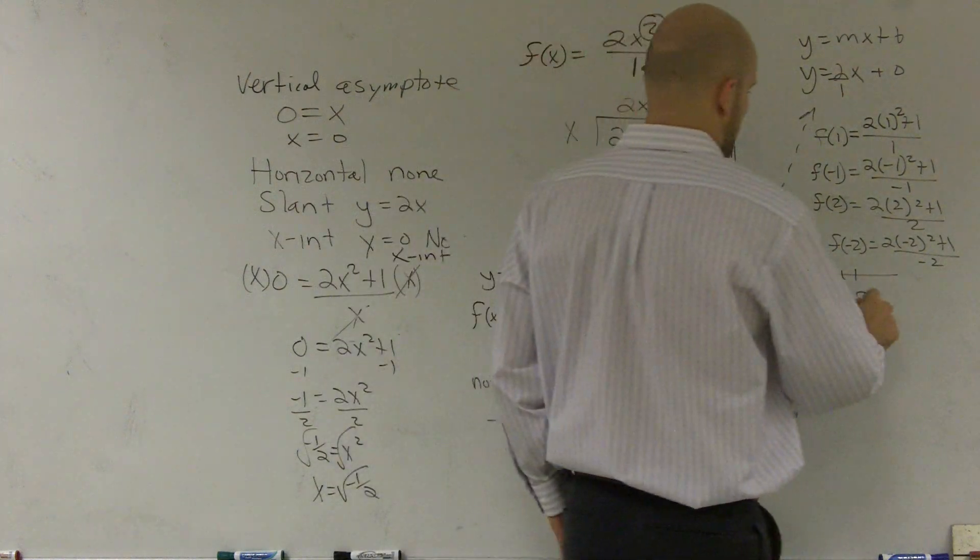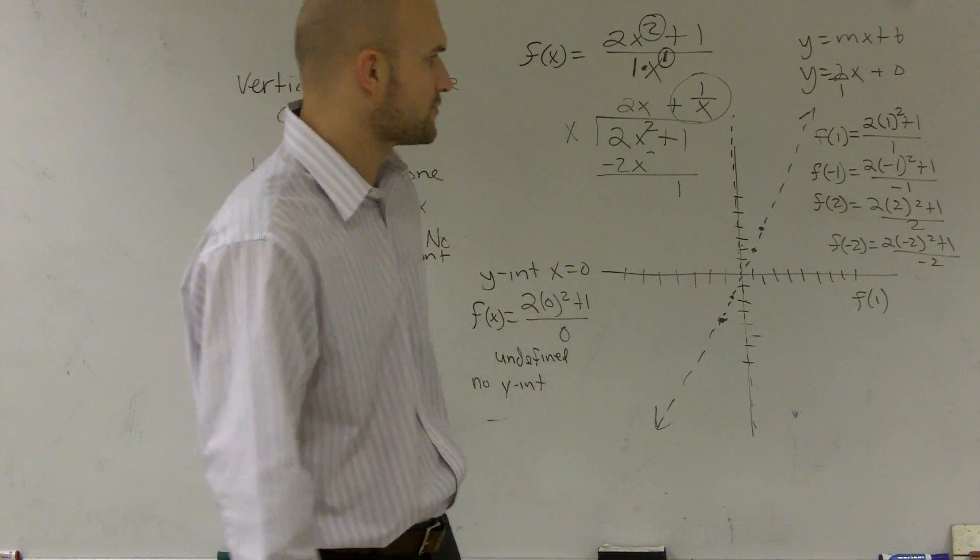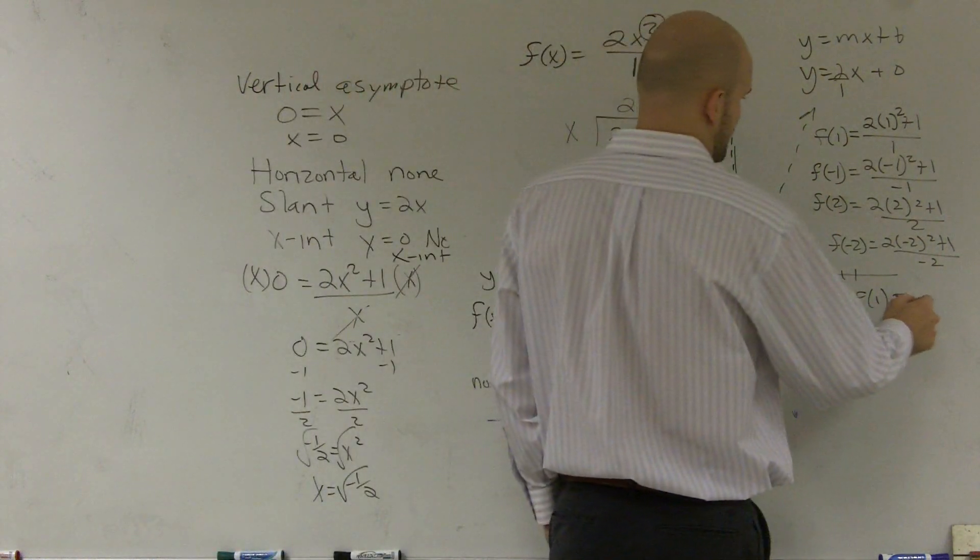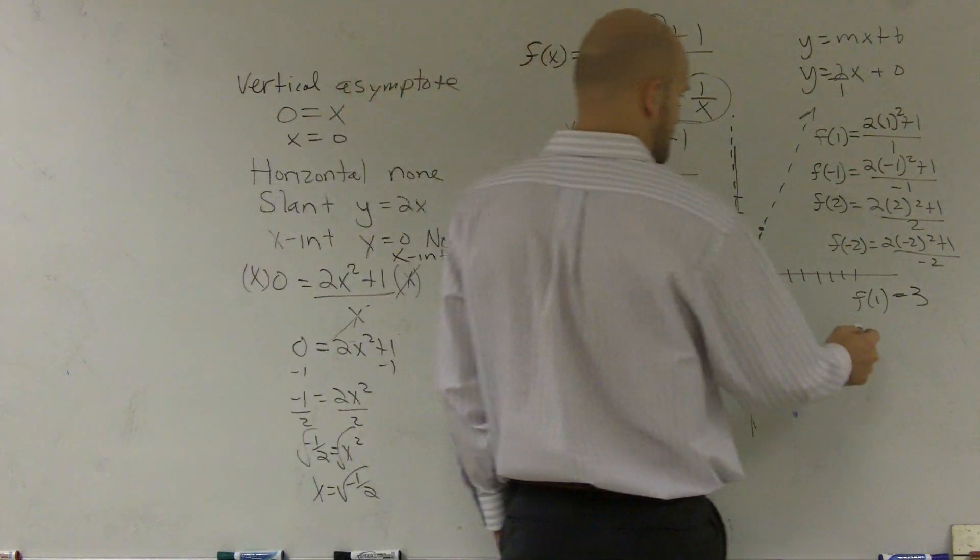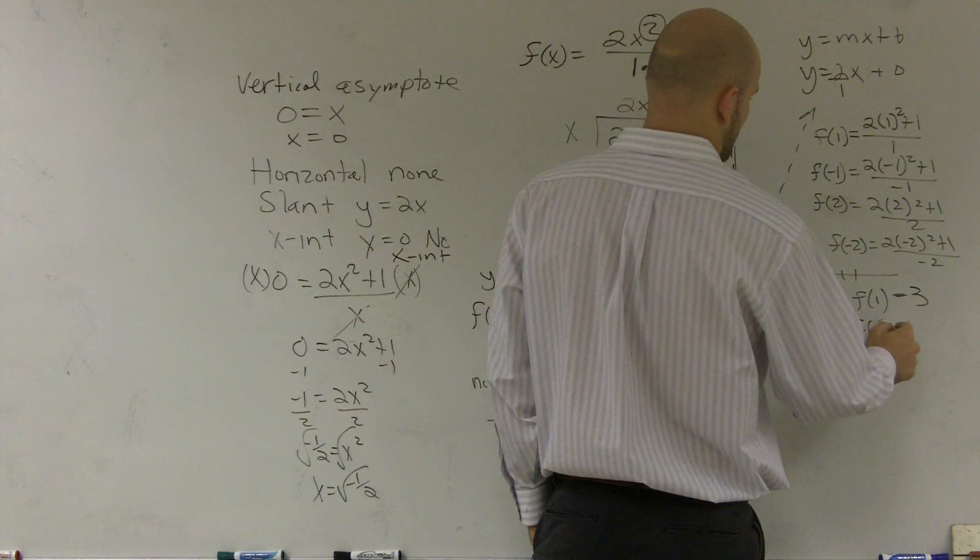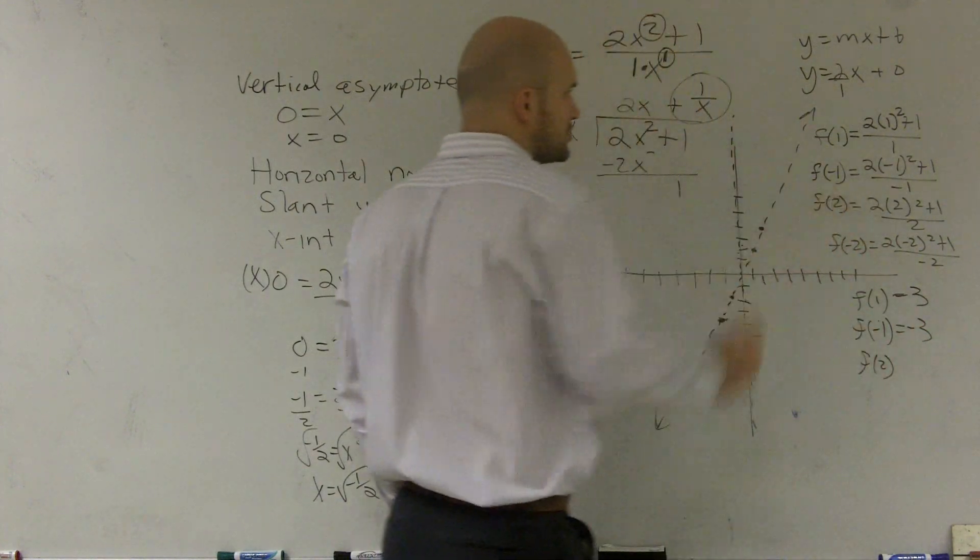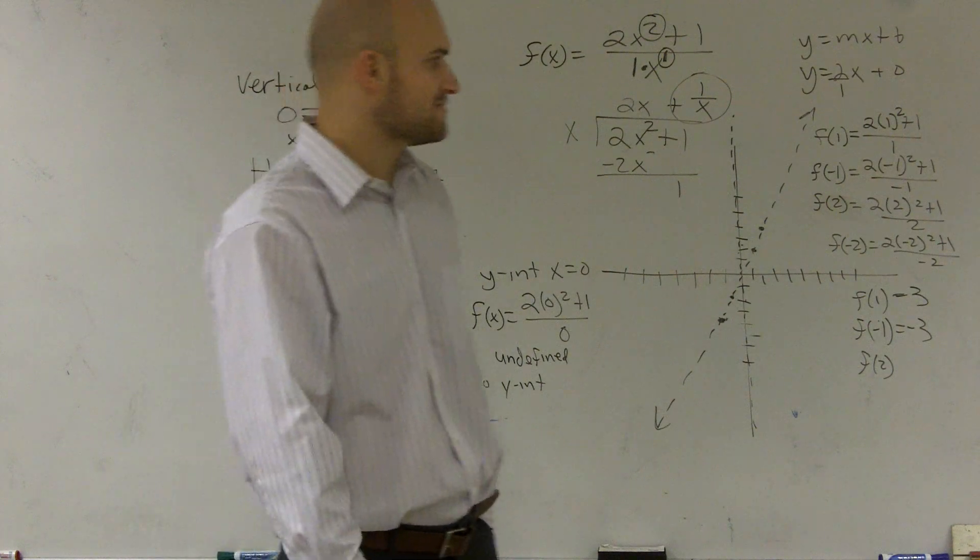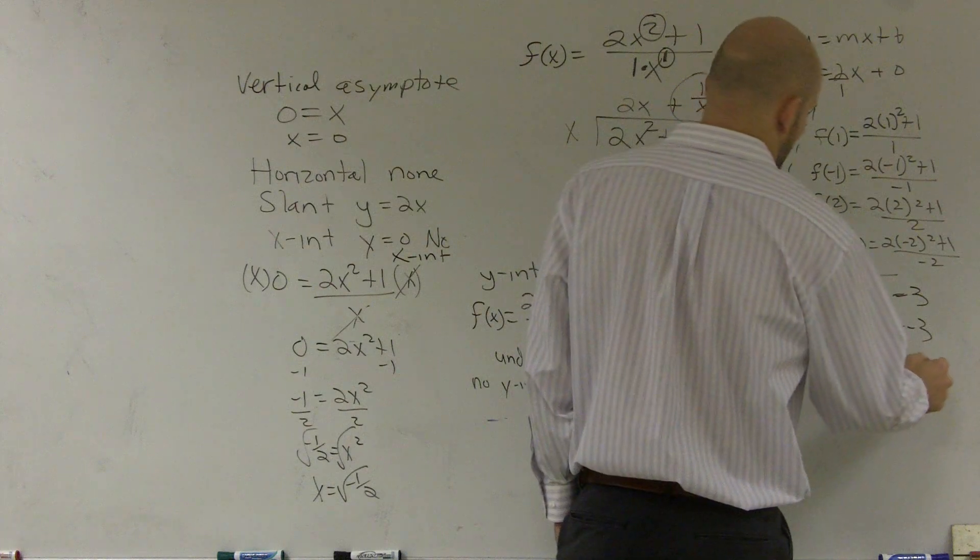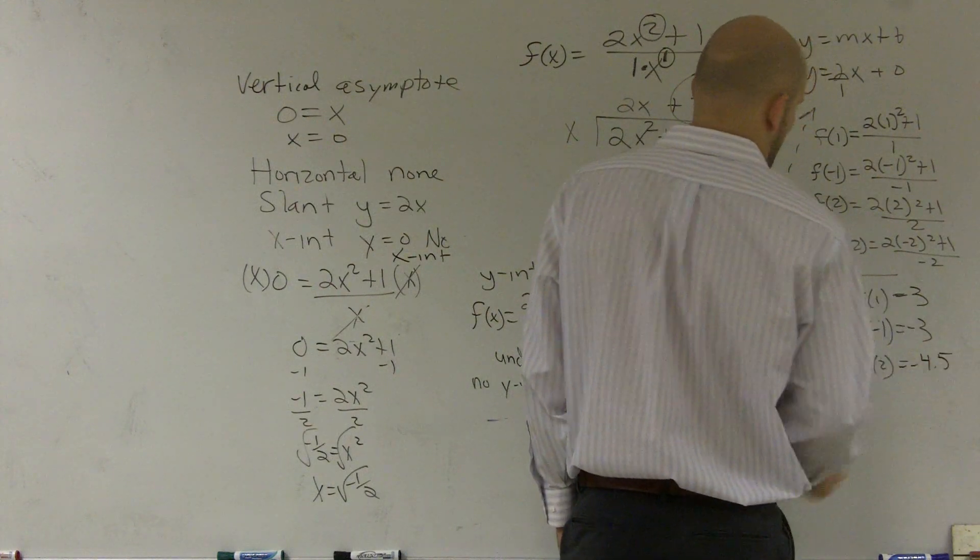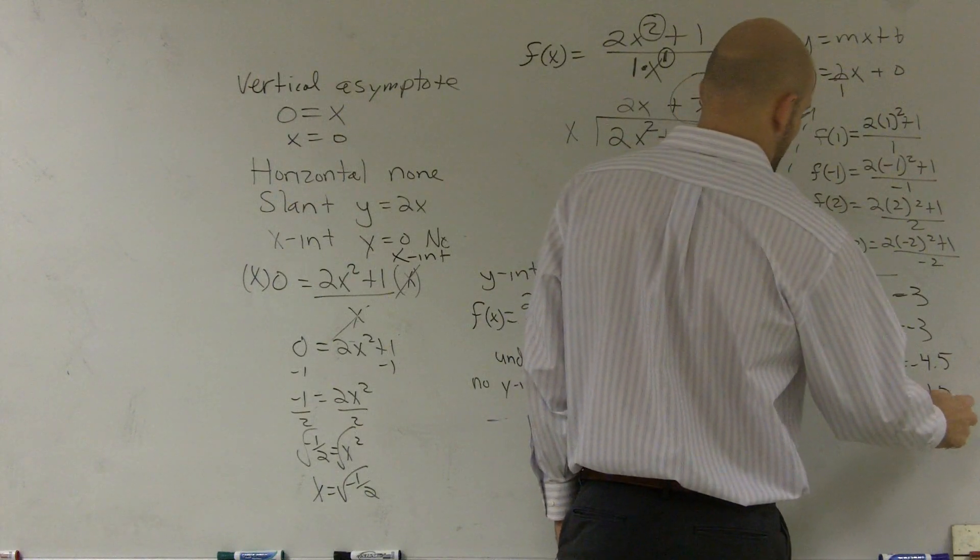So f of 1. 1 squared is 1 times 2 is 2 plus 1 is 3 equals 3. f of negative 1 is going to be a negative 3. f of 2. 2 squared is 4. 2 times 4 is 8 plus 1 is 9 divided by 2 is 4.5. And f of negative 2 will equal negative 4.5.